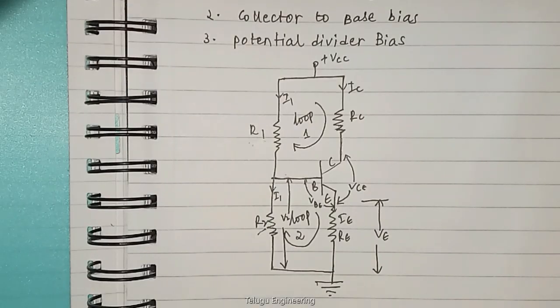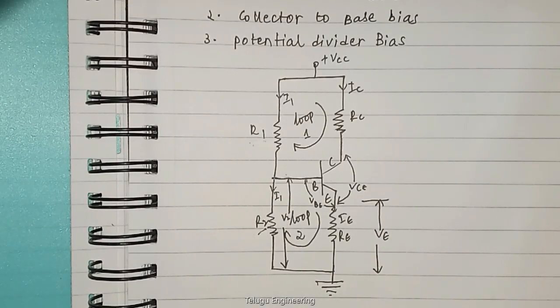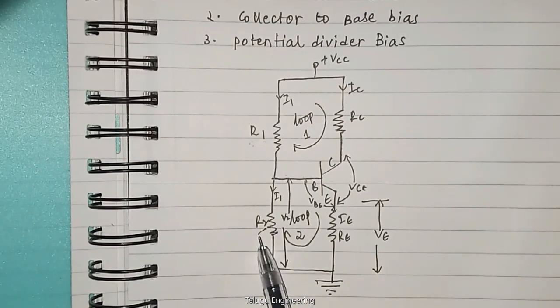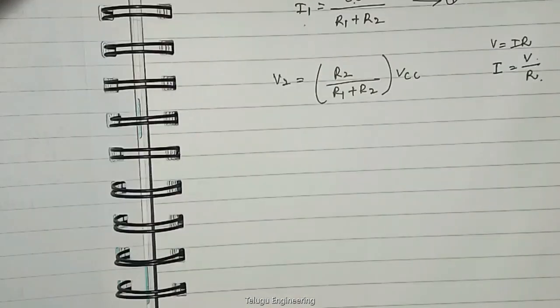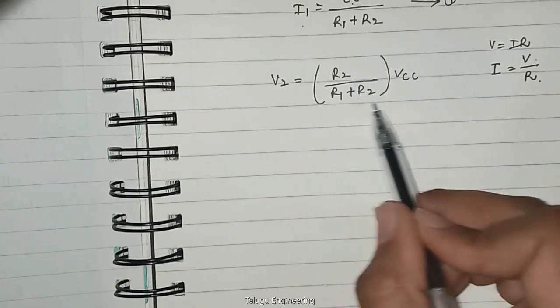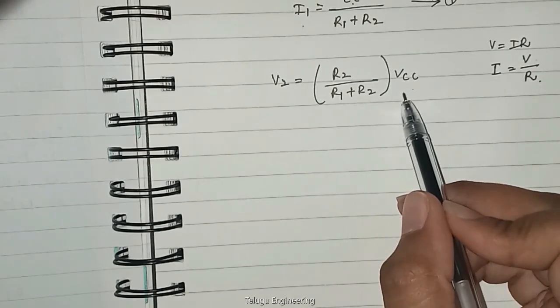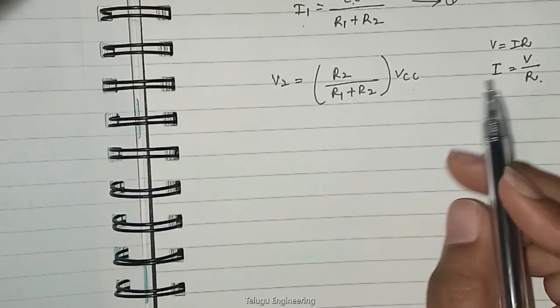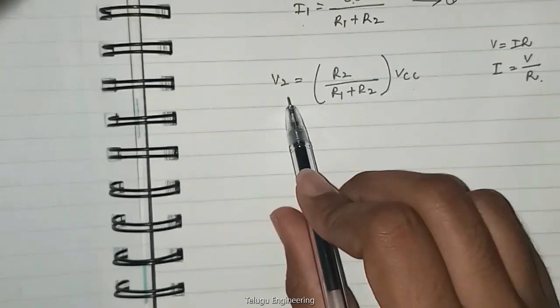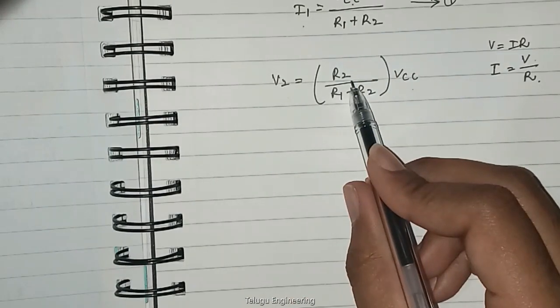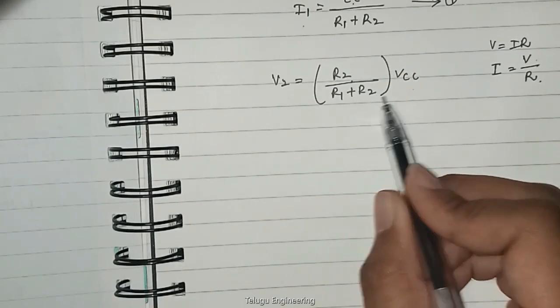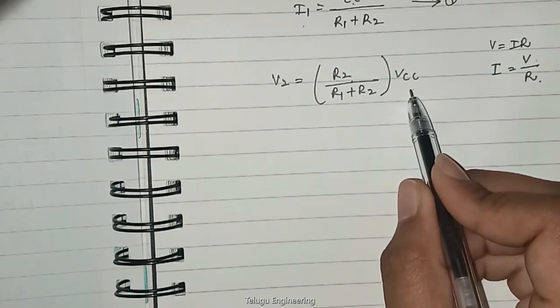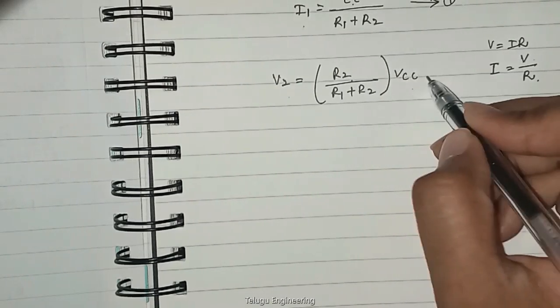Next, according to the voltage division rule, the voltage drop across R2 is given by V2 and is written as R2 by R1 plus R2 into VCC. We are all aware of that rule. V2 is given by the individual resistance R2 by total resistance R1 plus R2, since these are in series, into total voltage VCC. Now let this be equation number two.